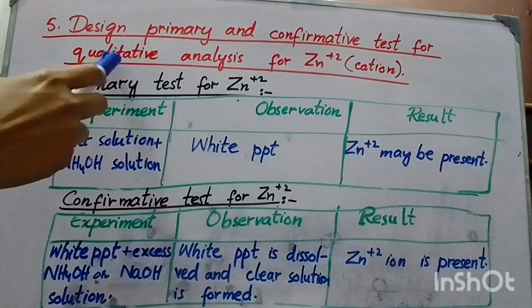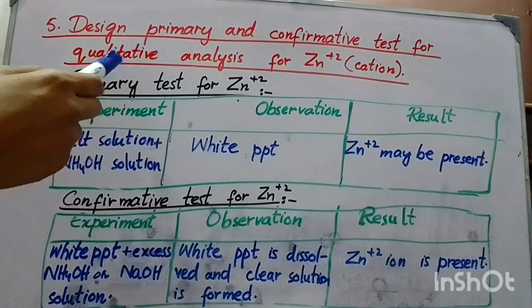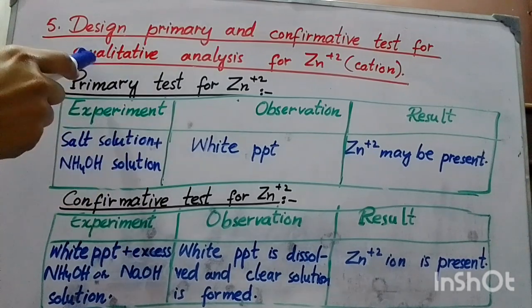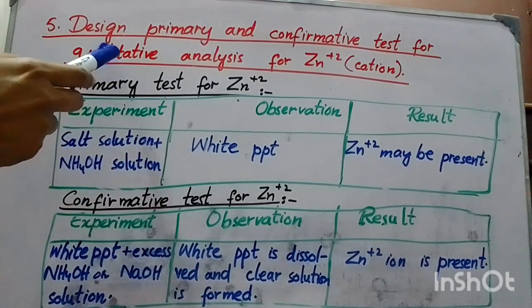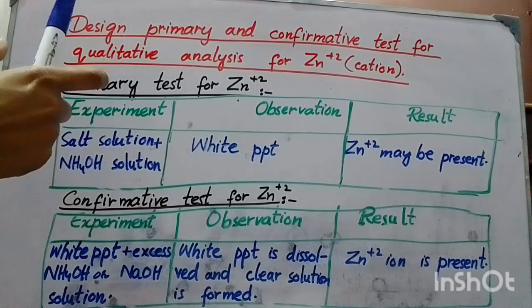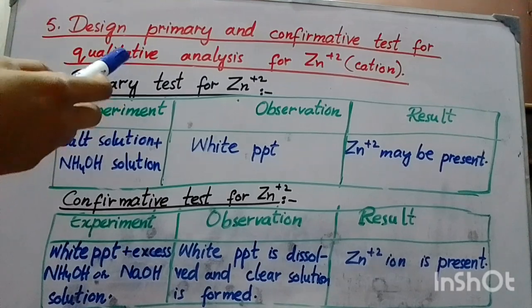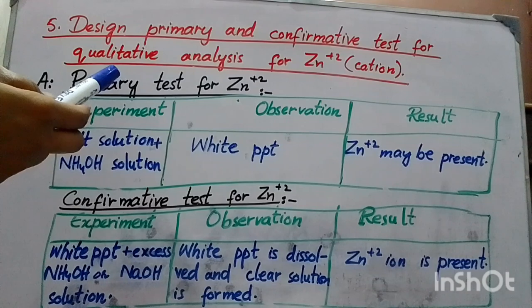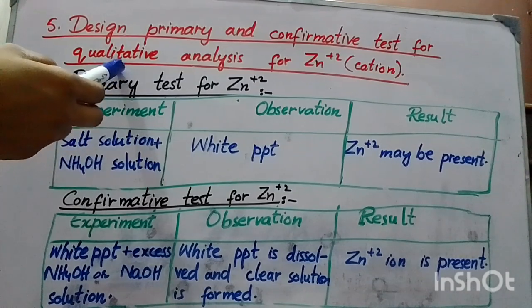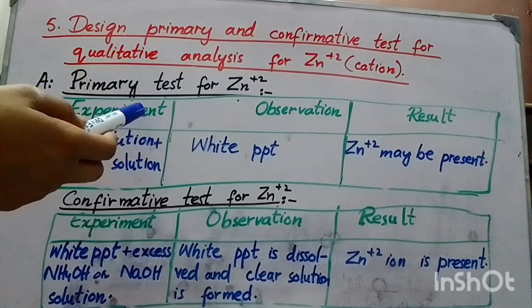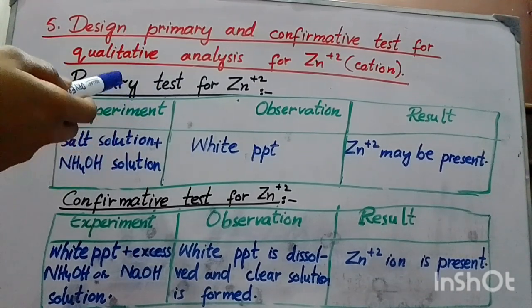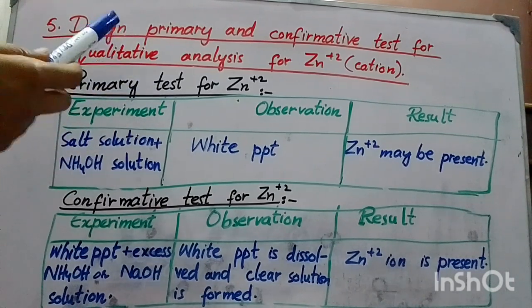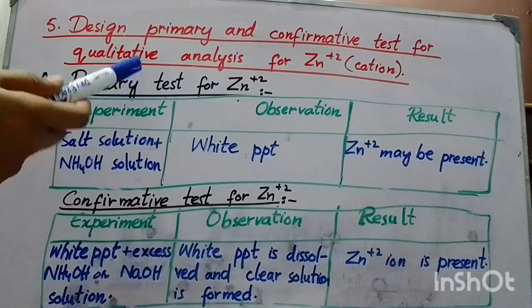What is qualitative analysis? There are two types of analysis: qualitative and quantitative. In qualitative analysis, if you have an unknown solution, we need to identify what ions are present — for example, sodium, calcium, or zinc. So we need to perform qualitative analysis to determine which ion is present in the solution.